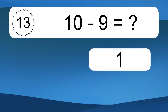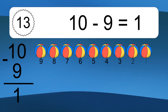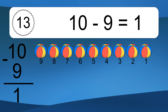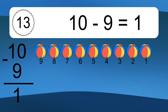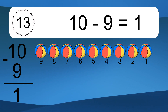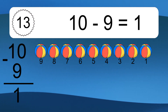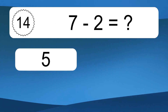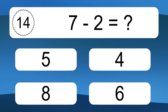10 minus 9 equals 1. Let's count it. 9, 8, 7, 6, 5, 4, 3, 2, 1. 7 minus 2 equals what?